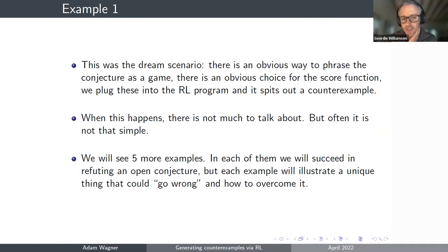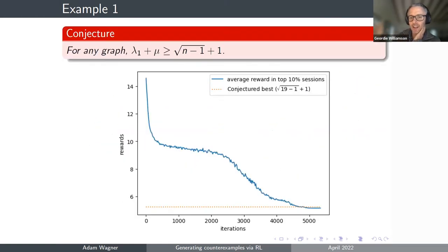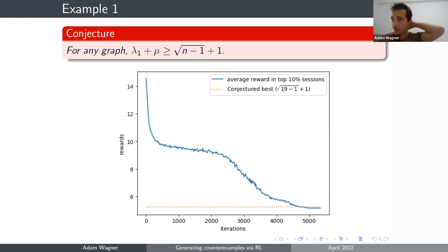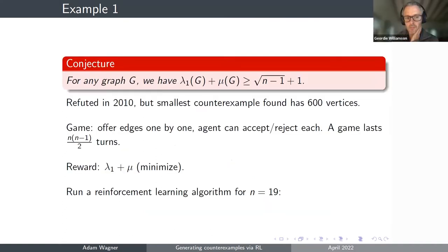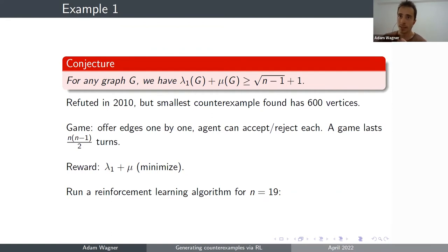Can I just ask — in this example, you don't have any feedback along the road, so you play the game with no idea what you're doing, and then at the end you get your score? That's right. In many cases there's really no way to give feedback along the road. You could try to give feedback for the partial graphs as well — define the score function λ₁ + μ for the partial graph you're constructing. In some cases it helps, in some cases it doesn't, and it's very hard to predict which. I usually just try both approaches for most problems.